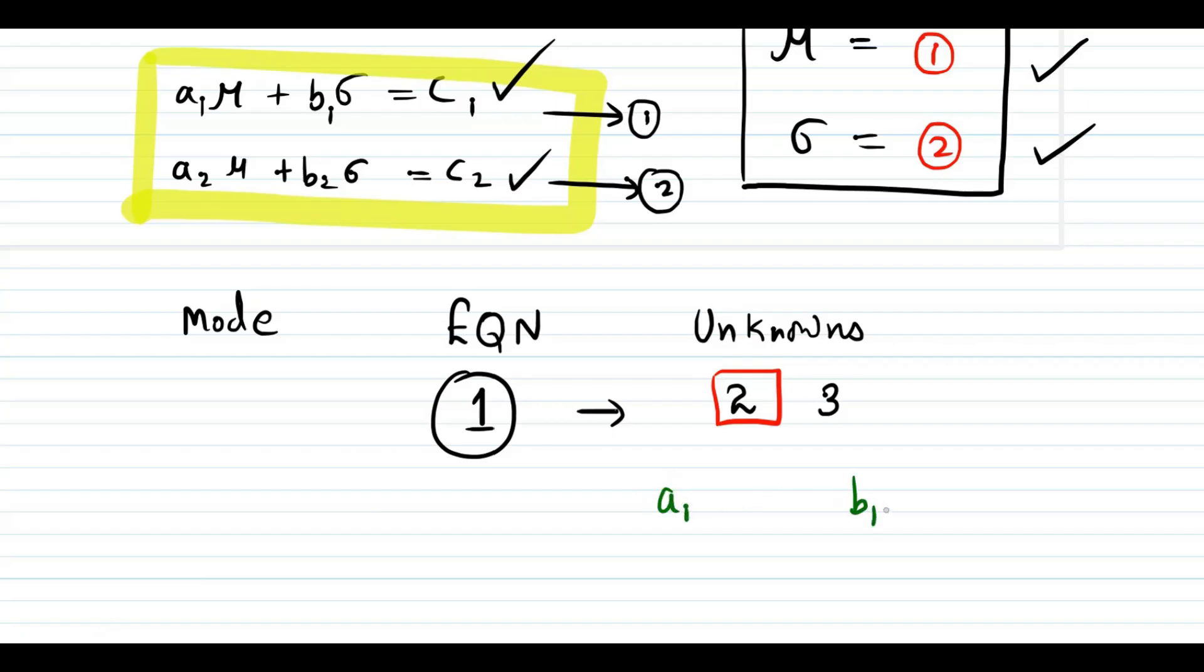Once you press 2, the calculator will ask the a1 value. Press it, then press equal to button, then b1 value, then c1 value. Very important: a1 and b1 should be in left hand side and c1 should be in the right hand side of the equation. If you do in a different way, if c1 is in left hand side, you will put negative and it will become an error.